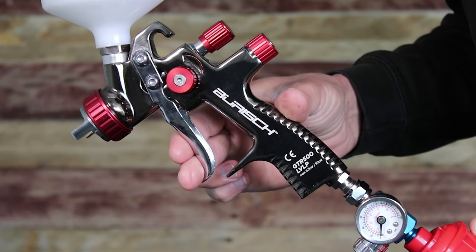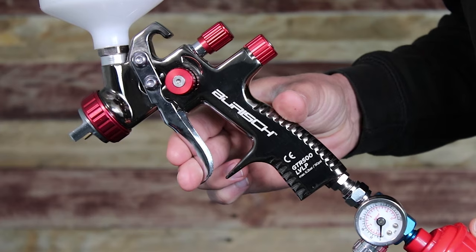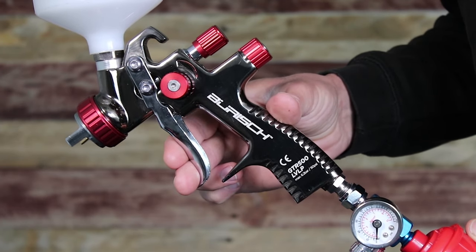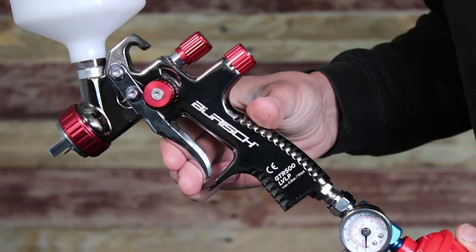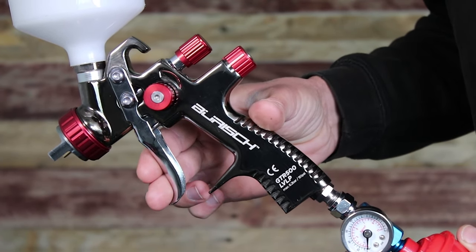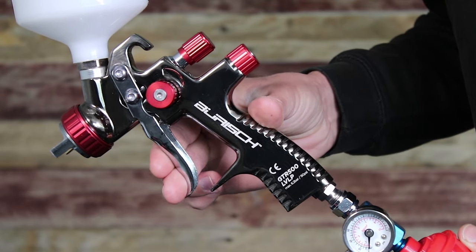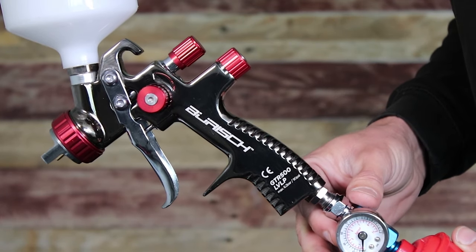This is handy for blowing dust off panels prior to spraying as well as allowing you to set up the air pressure to the spray gun accurately without wasting paint. If you press a little harder on the trigger, it will start to release paint out of the fluid tip and into the air cap to allow it to atomize and create a mist.